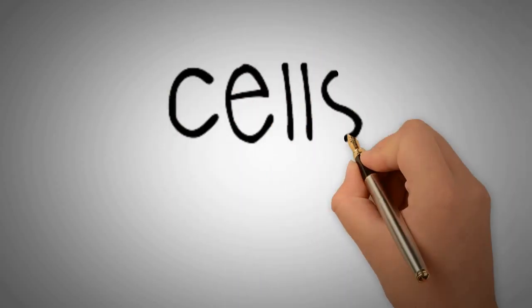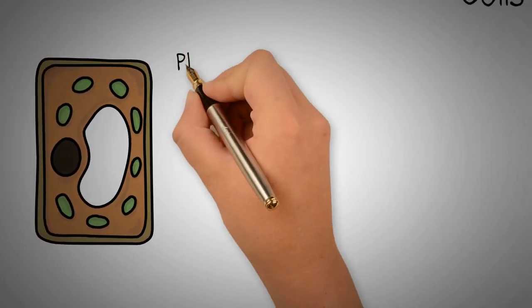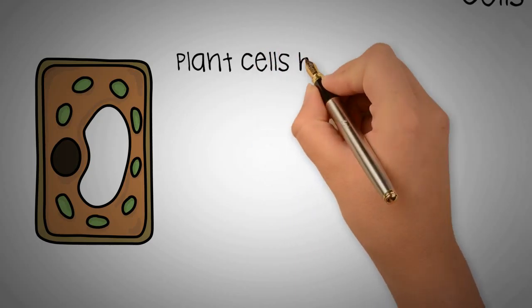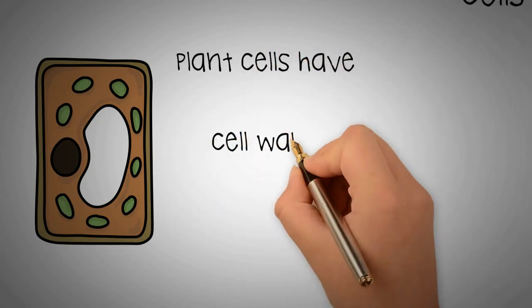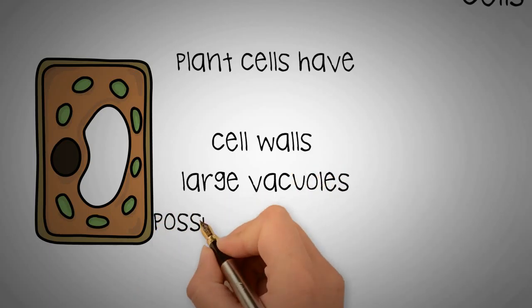Like all living things, plants are made of cells. You may remember from previous studies that plant cells differ from animal cells because they contain cell walls, large vacuoles, and possibly chloroplasts.